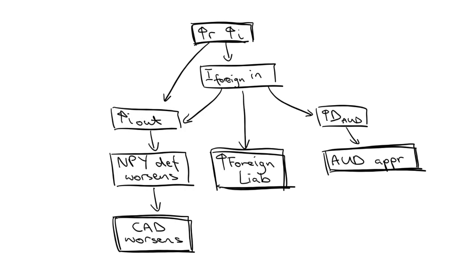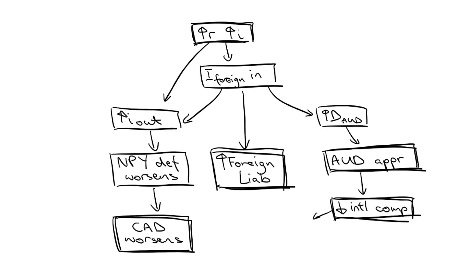Following from exchange rates, monetary policy can consequently impact international competitiveness, the trade balance, and subsequently the current account deficit. As an increase in the cash rate attracts foreign investment and causes an appreciation of the dollar, this will cause Australia to lose international competitiveness. Exports will become less attractive to foreigners, and imports will become more attractive to Australians. This then worsens the balance of goods and services, and again worsens the current account balance.